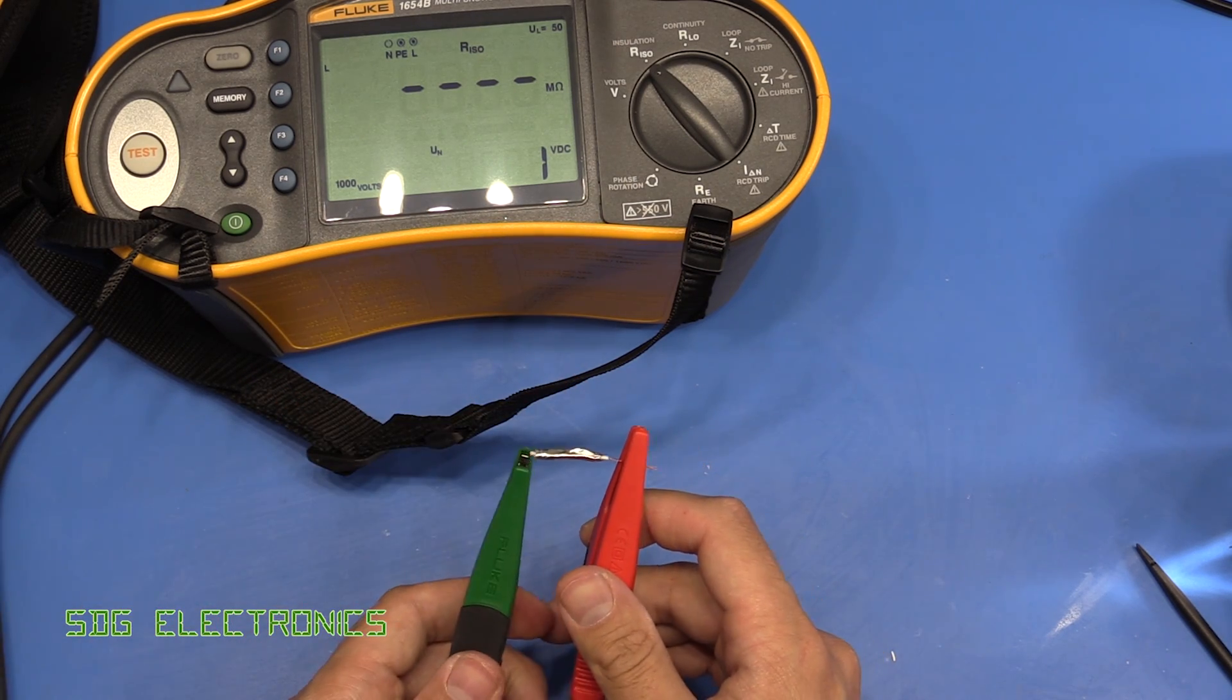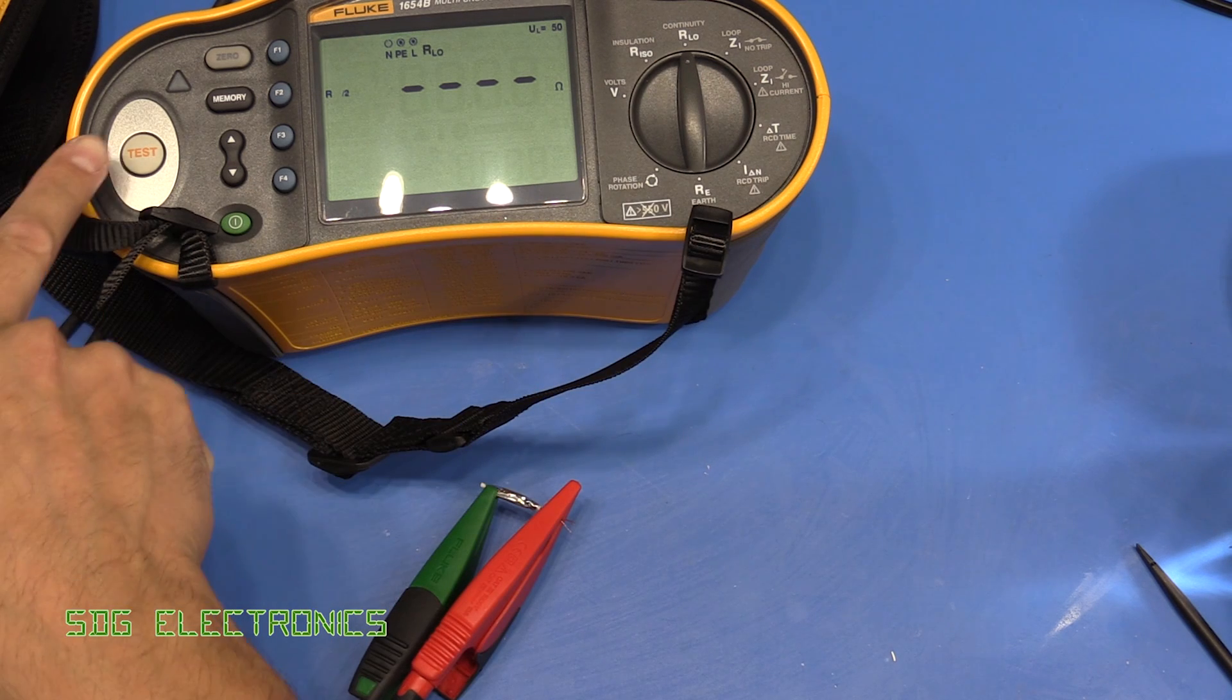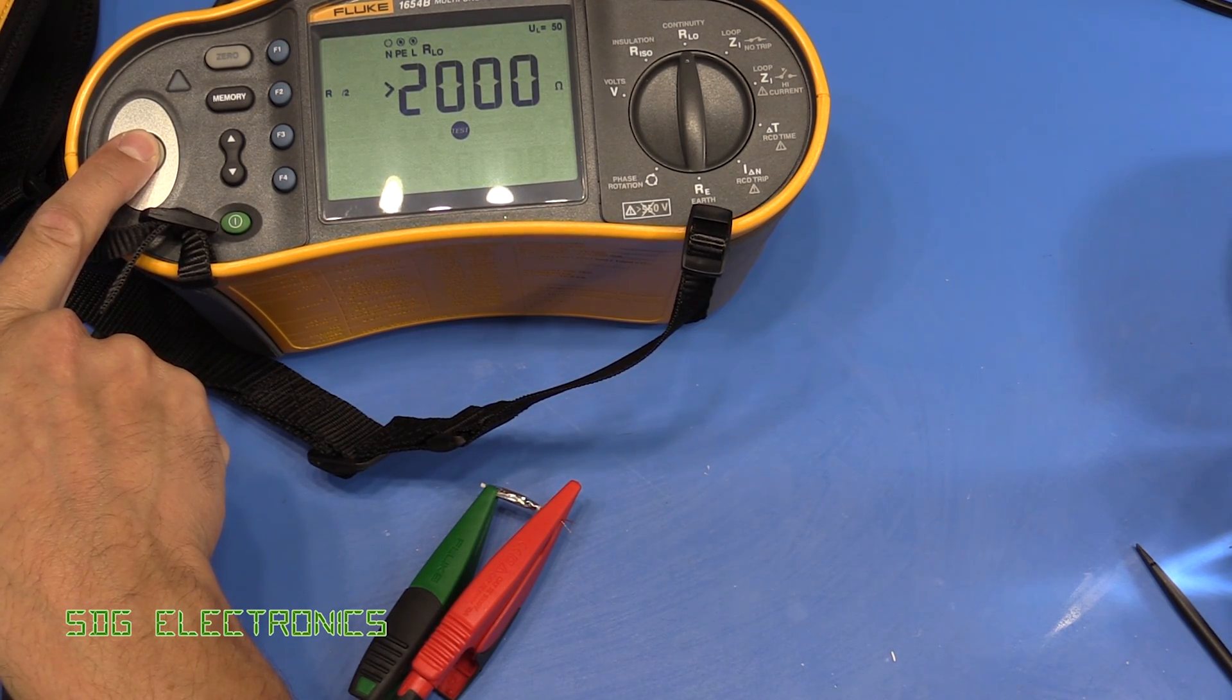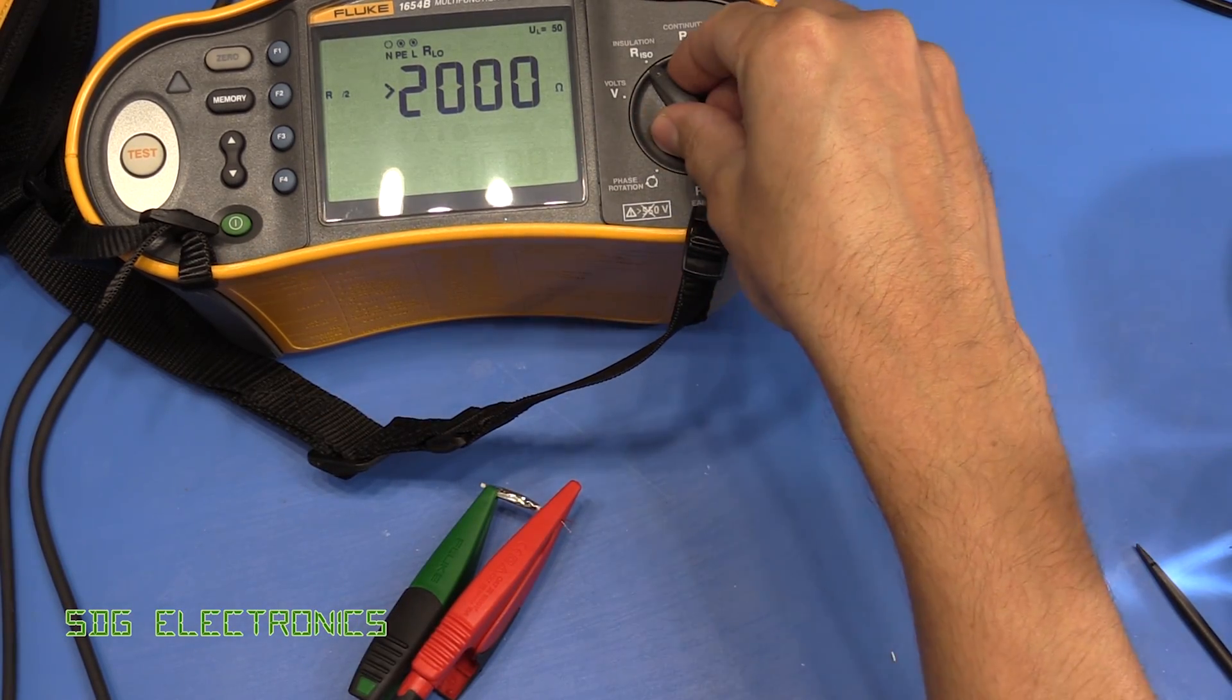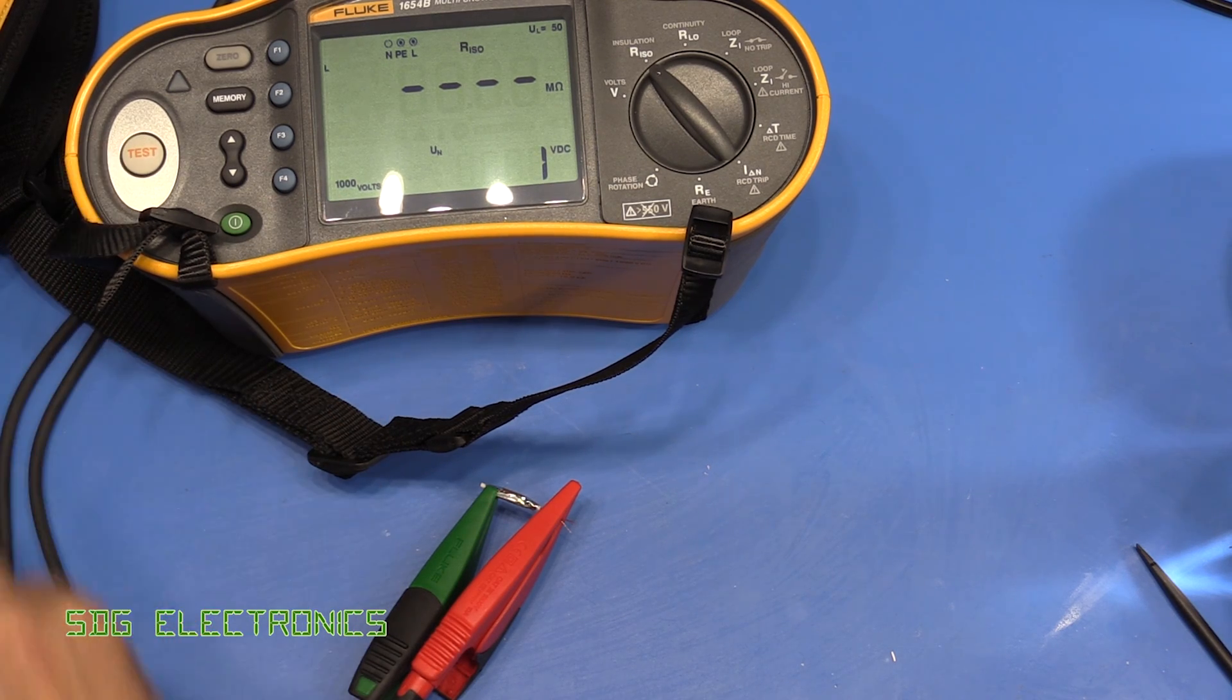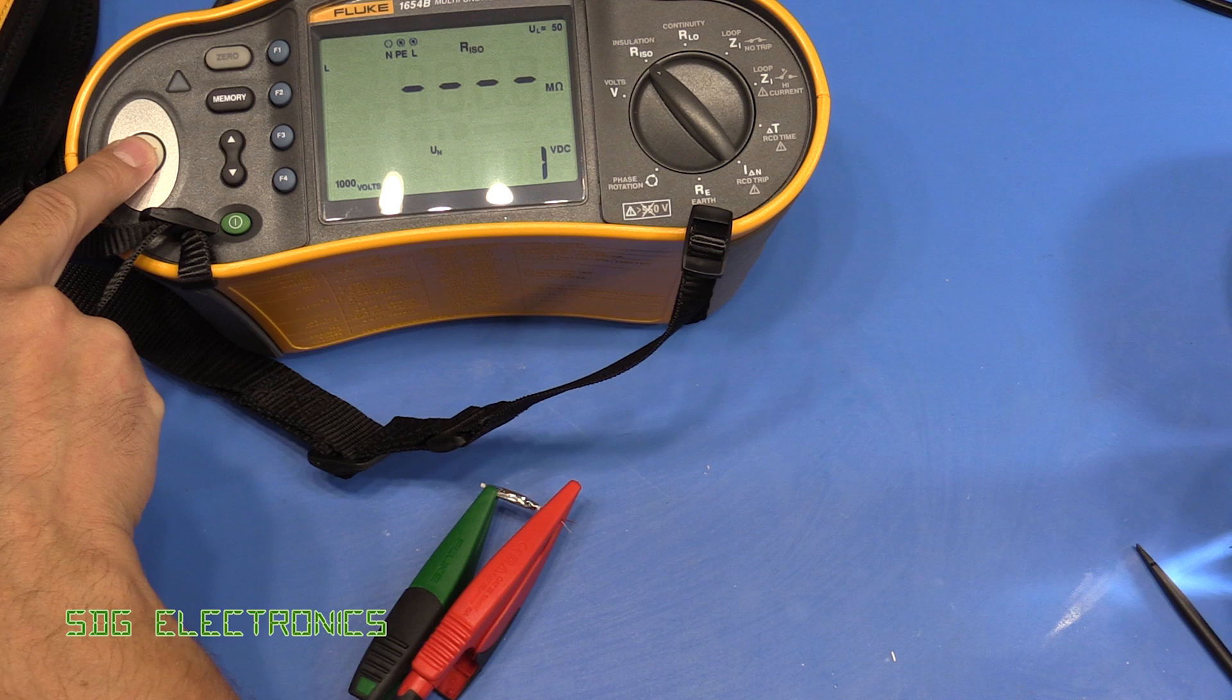Just testing it on continuity, if we press the test button we can read that the impedance is greater than 2,000 ohms. That's using a low voltage method. Then we can do the insulation test. We've got 1,000 volts selected which is our typical maximum that we'd ever want to test at. Let's see what we get.